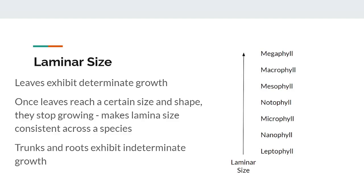Leaves exhibit determinate growth, which means that once a leaf reaches a certain size and shape, it stops growing. This is why a tree that is hundreds of years old can have the same size leaves as a much younger tree. Leaf size is primarily dependent on genetics, so an appropriate way of classifying tree species can be by leaf size, since they will roughly be the same throughout a species. This contrasts with how stems and roots grow, which is called indeterminate growth, meaning they will continue to grow as long as the tree has the necessary resources. From small to large, the leaf sizes go: leptophyll, nanophyll, microphyll, notophyll, mesophyll, macrophyll, and megaphyll.